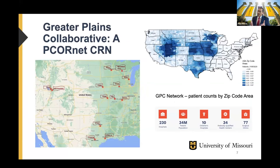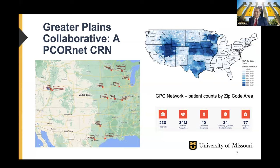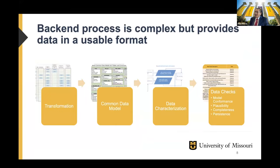One of the networks where the University of Missouri is the lead site is the Greater Plains Collaborative Network. The network size is 14 institutions, including a new institution, UCLA. Prior to that it was 13 institutions. The penetration of patients covers pretty much the entire USA based on our zip code distribution, but the concentration is high around the geographical location of the sites. We believe we are the largest network in terms of the size of the population we bring to PCORnet, which is more than 34 million patients. For providing data in a usable format — the PCORnet common data model — every site has to go through a complex transformation and mapping process.